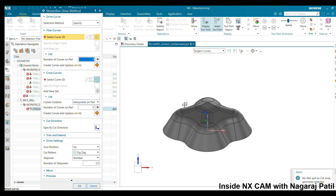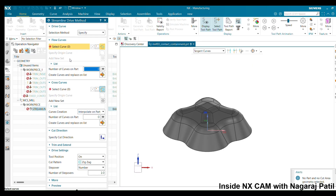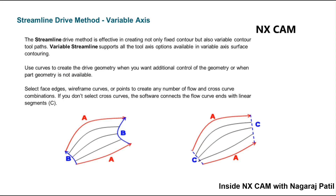The Edit option helps you to specify flow curves and cross curves, which use curves to create drive geometry when you want additional control over geometry or when part geometry is not available. You can select face edges, existing curves, wireframe curves, or specify points to create a number of flow and cross curves.